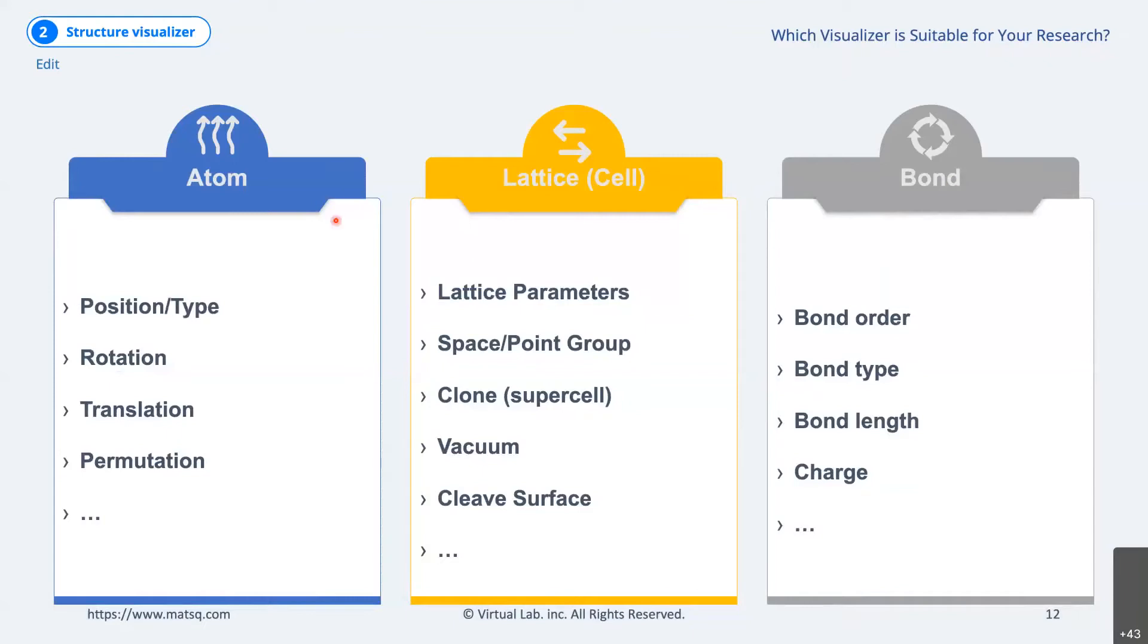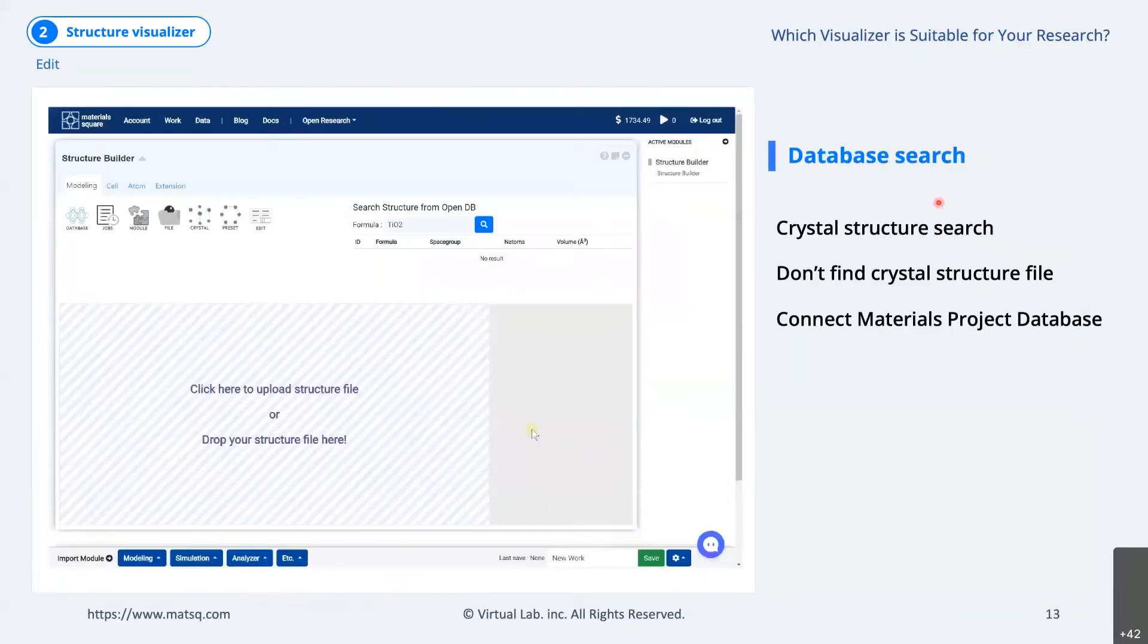Atomic manipulation is a function used to modify structure defined by the position of atom and type of elements, and consists of functions such as modification, rotation, movement, and substitution of atomic position. Cell manipulation consists of functions such as modification of lattice parameter, cell generation, and modification using space group, clone function for making supercell, vacuum function for making surface, and clip to define orientation. Bond may or may not be necessary depending on the solver, but in calculations for dealing with chemical molecules, it is almost essential to defining.